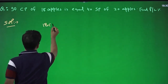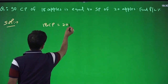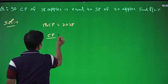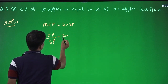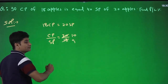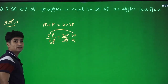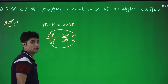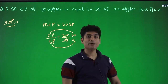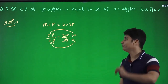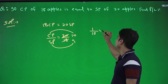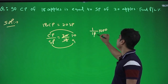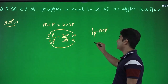Write 18 CP = 20 SP. Bringing CP/SP to one side gives 20/18, which simplifies to 10/9. If CP is 10 units and SP is 9 units, SP is less than CP so a loss is incurred. The loss is 1 unit, calculated on CP of 10 units. Multiply by 100 to get 10% loss.